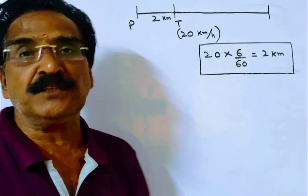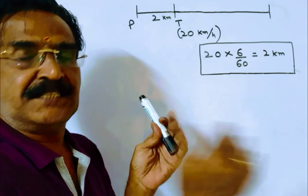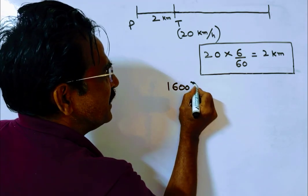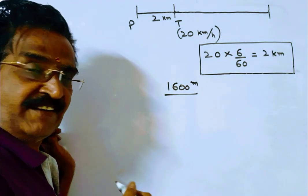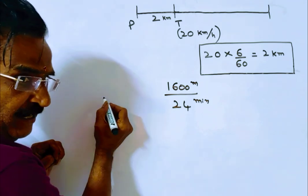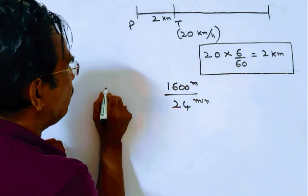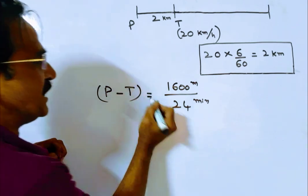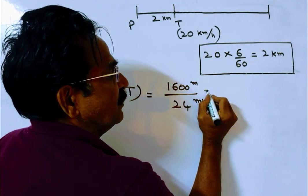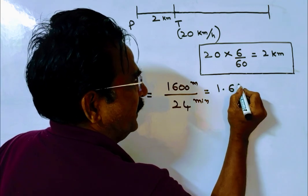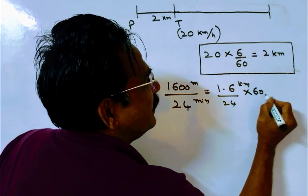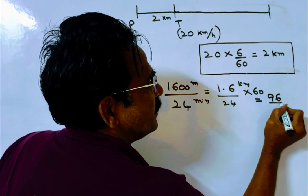The initial distance is 2000 m. Now the distance is only 400 m. That means, in the chasing process, 1600 m is travelled in 24 minutes. So distance by time gives us relative velocity — relative velocity of police and thief. Since they move in the same direction, police velocity minus thief velocity equals distance covered divided by time: 1600 m equals 1.6 km, divided by 24 by 60 hours, so 60 comes to the numerator — that gives 96 by 24.